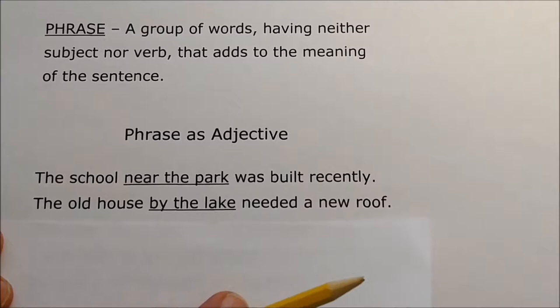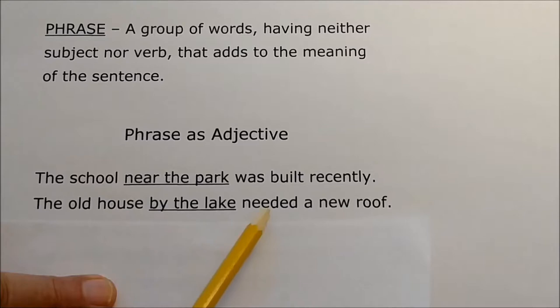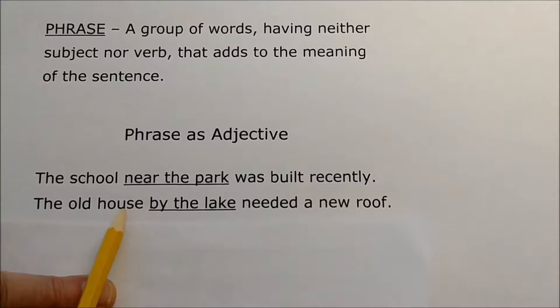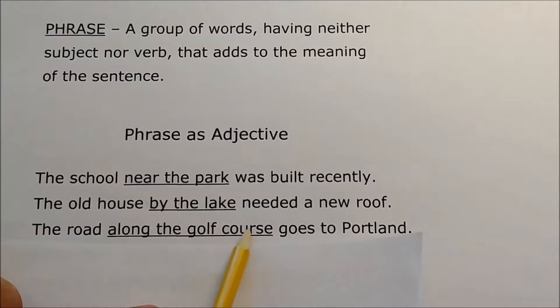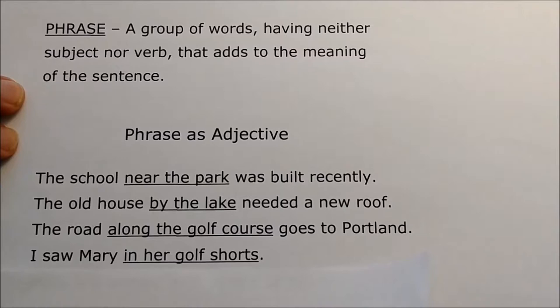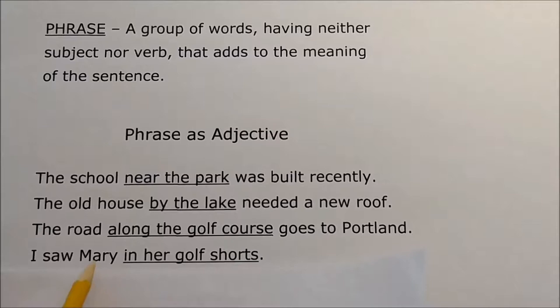The old house by the lake needed a new roof. House is the subject, needed is the verb, roof is the direct object. But notice: by the lake is a prepositional phrase and it's an adjective describing house. The road along the golf course goes to Portland. Along the golf course is a group of words — a phrase acting as an adjective describing the road. I saw Mary in her golf shorts. In her golf shorts is an adjective describing Mary, who is a direct object. I is the subject, saw is the verb, Mary is the direct object. Adjective phrases can describe both subjects and direct objects.